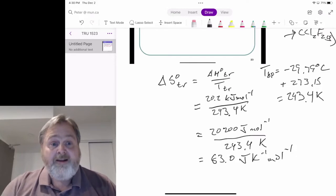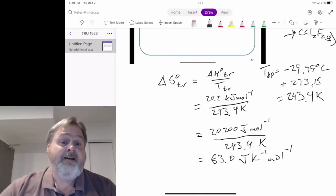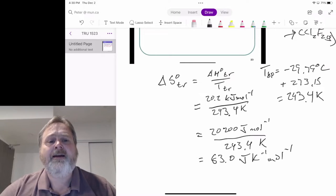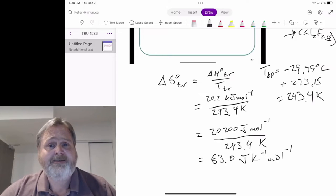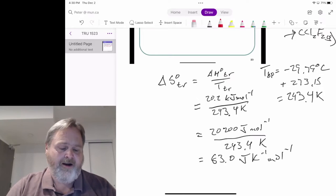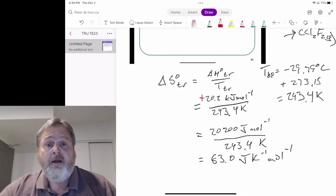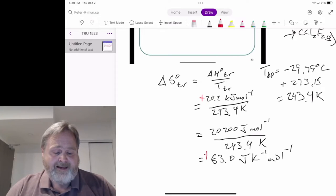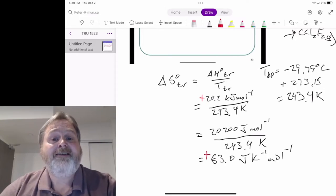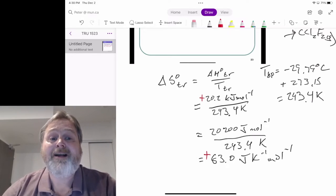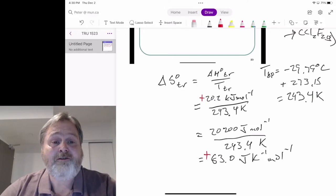There are a few things we can take from this to build our intuition. We need to put energy in to take a liquid to a gas. That is why our enthalpy of transition, the enthalpy of vaporization in this case, is a positive number. That means our entropy change for the transition has to be positive as well, because temperatures can never be negative since the zero of our scale is absolute zero.